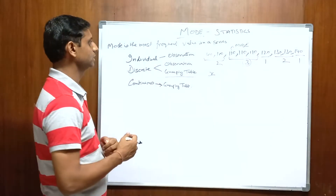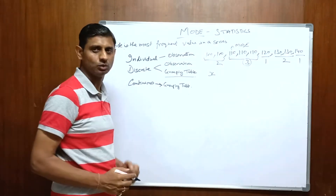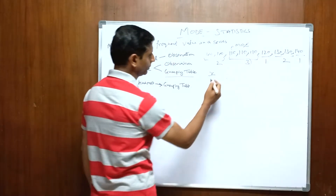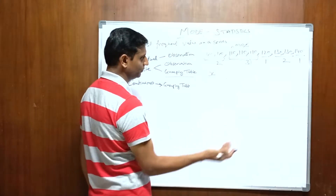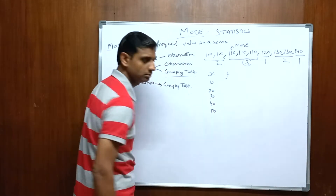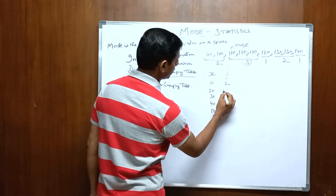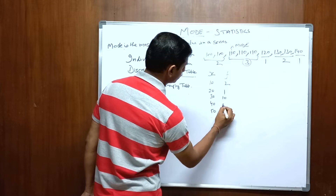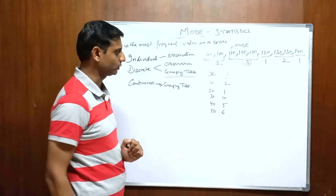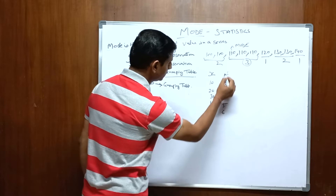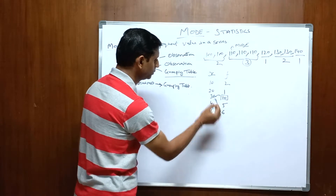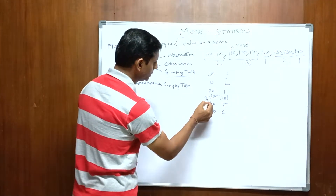Now let's come to the discrete series. In a discrete series, there are two components: the value and the frequency. Let's say the values are 10, 20, 30, 40, and 50, with frequencies 2, 1, 10, 5, and 6 respectively. The maximum frequency is 10, and that corresponds to the value 30. So 30 is the mode.